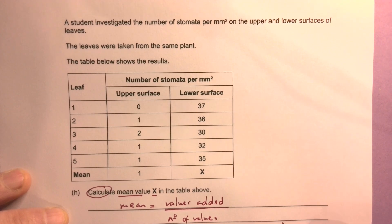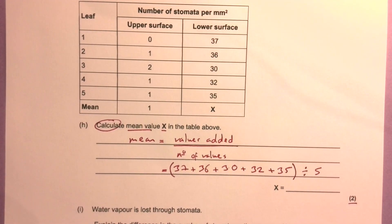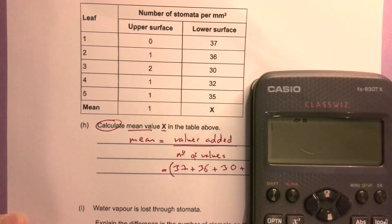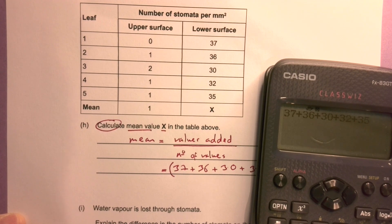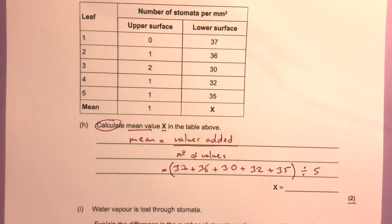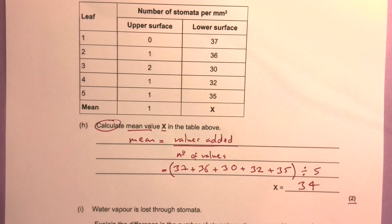Divided by 5 gives me 37 plus 36 plus 30 plus 32 plus 35, divided by 5, equals 34. I don't need to worry about rounding that.